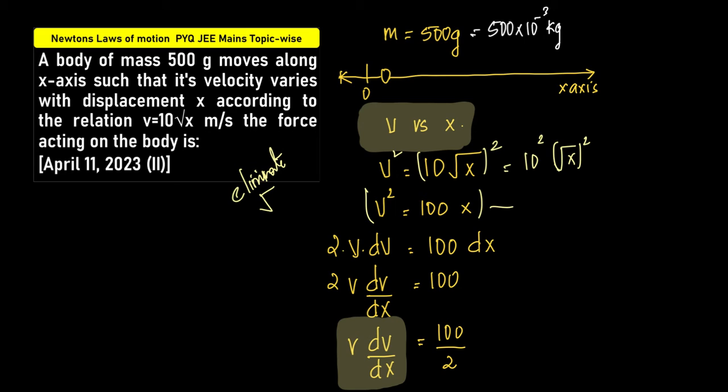Now if we differentiate this equation with respect to x, what do we get? Derivative of v square will be 2v dv, 100x would be 100 dx. Now if we bring dx to the other side, to the LHS, so what we get is 2v into dv by dx equals 100. And therefore, we can say that v into dv by dx equals 100 by 2, which actually is equal to 50.